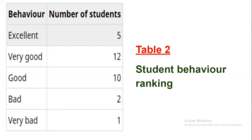For instance, categories used in a table could appear as numbers from one to five: one for very bad, two for bad, three for good, four for very good, and five for excellent.